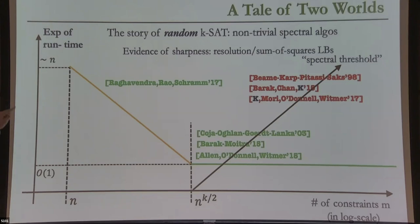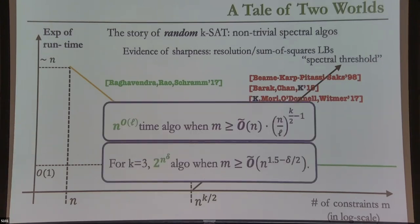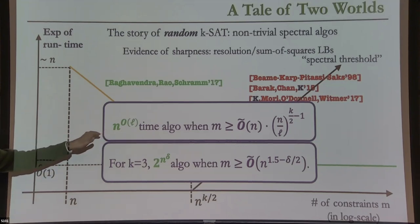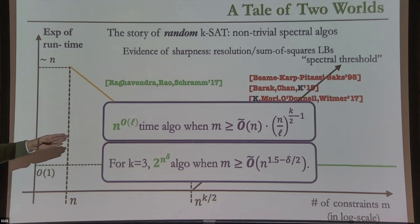Because this curve is important, I'll write down the precise trade-off. I'll parameterize the number of constraints with parameter L. When L equals N you get basically N constraints (ignoring log factors) and an exponential-time algorithm. When L equals 1 you have N^{K/2} constraints (up to log factors) and a polynomial-time algorithm. So there's a full interpolation trade-off between these two endpoints.